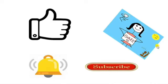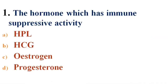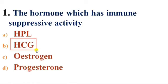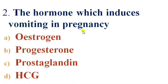First question: The hormone which has immune suppressive activity. Options: A) HPL, B) HCG, C) Estrogen, D) Progesterone. Answer is B — HCG, that is Human Chorionic Gonadotropin hormone. The hormone which has immune suppressive activity is HCG.